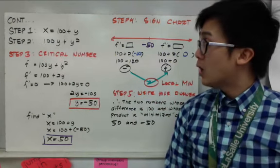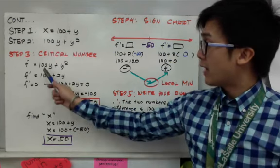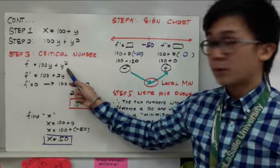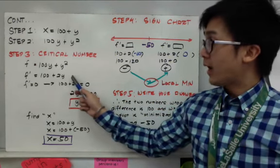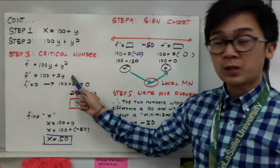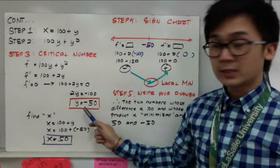To find your critical number, we're going to use the equation that we got from step number two. So that will be our function here, 100y plus y squared. And taking its derivative, we'll have 100 plus 2y. And setting it to zero will give us the critical number. And we found out that the critical number will be y equals negative 50.